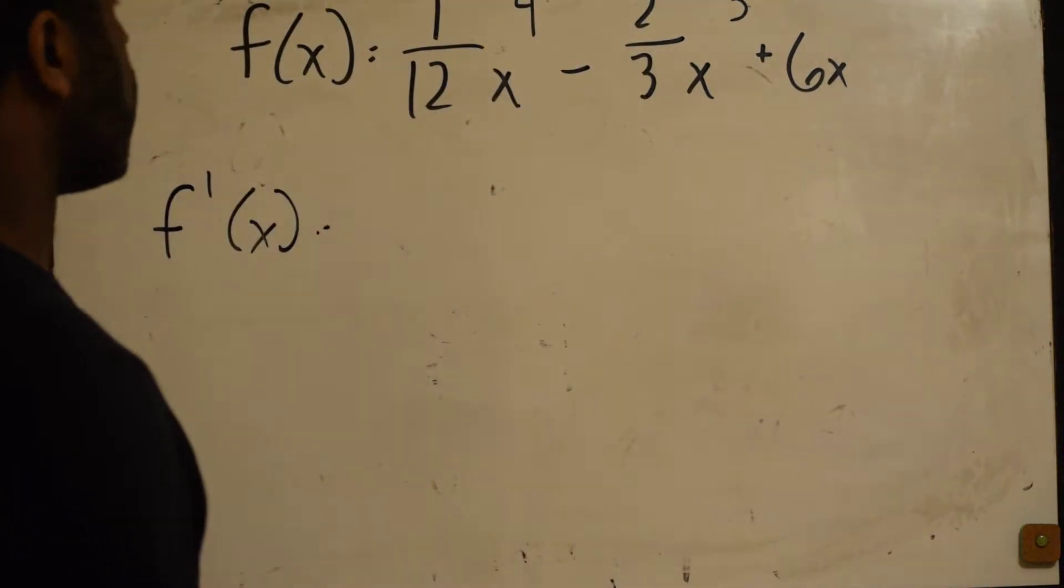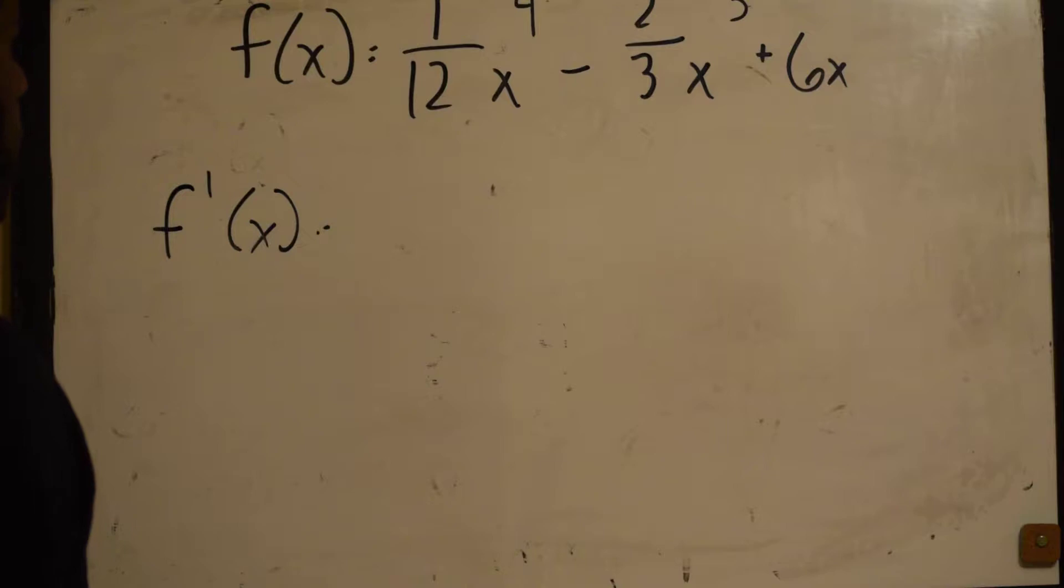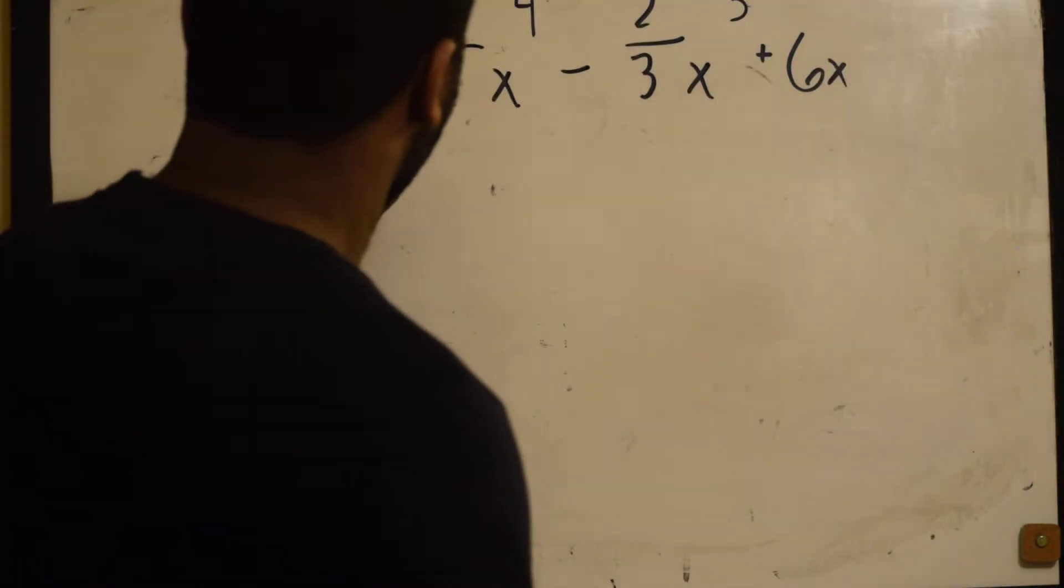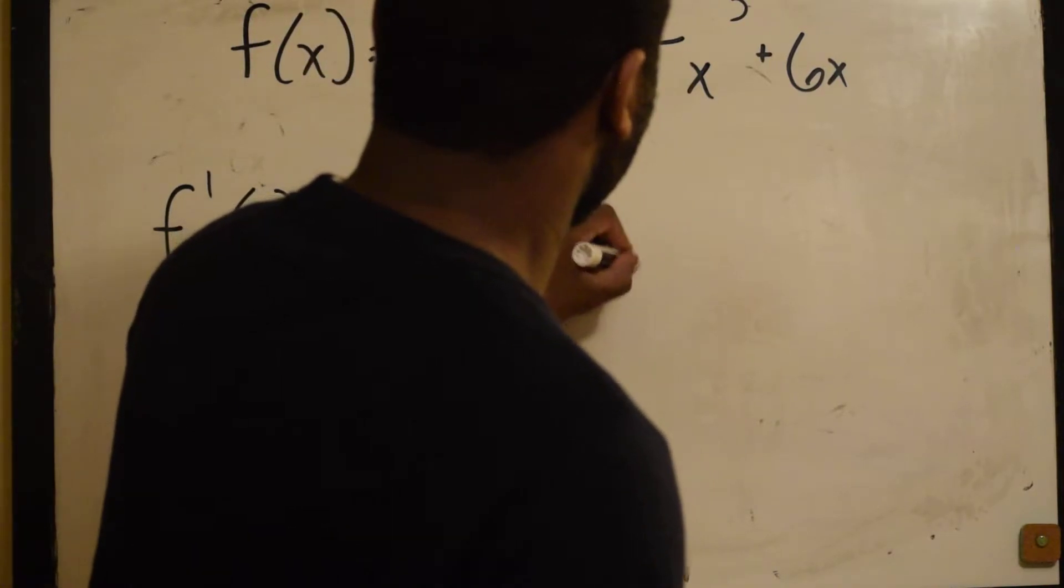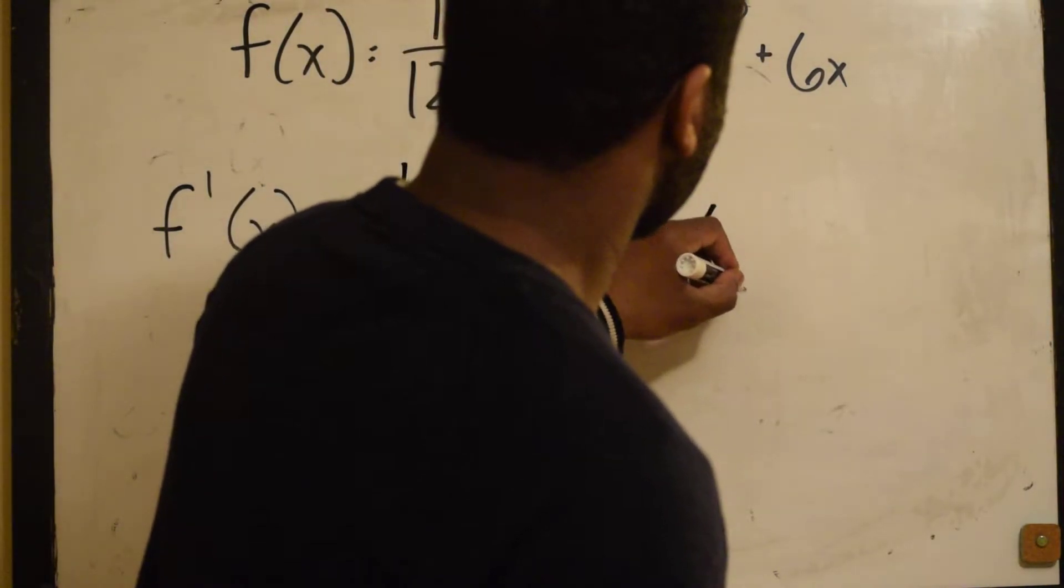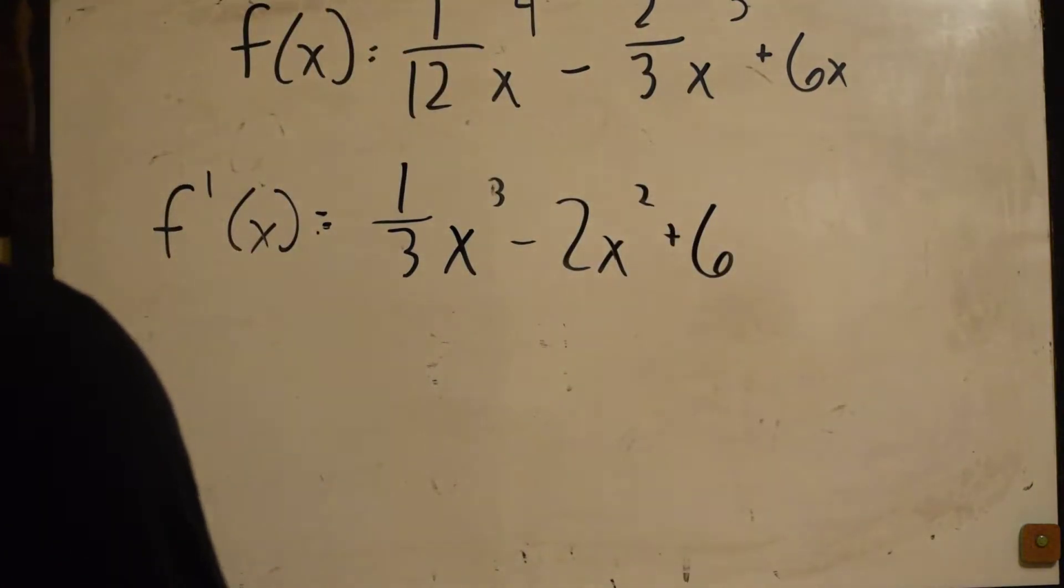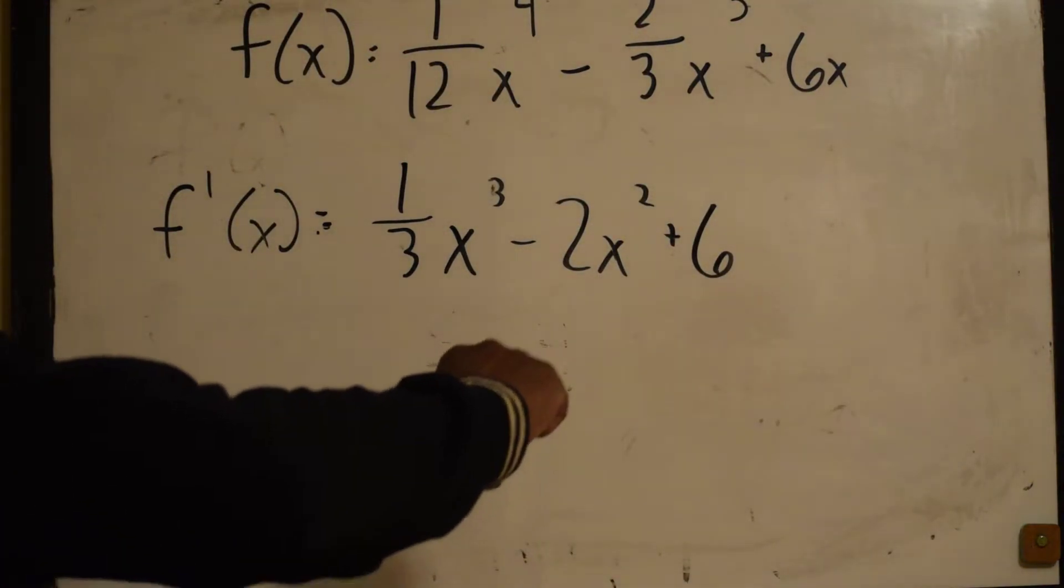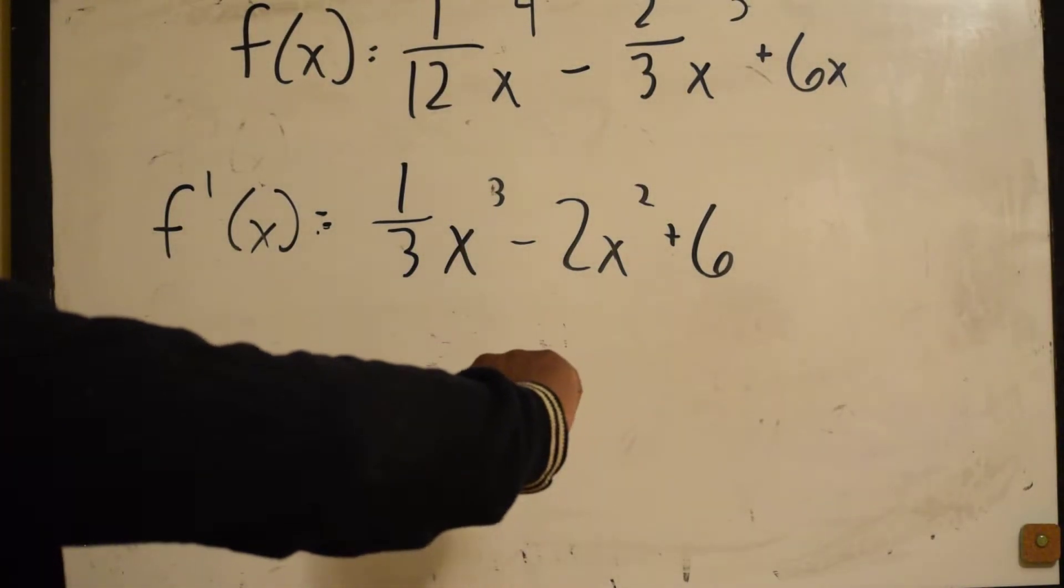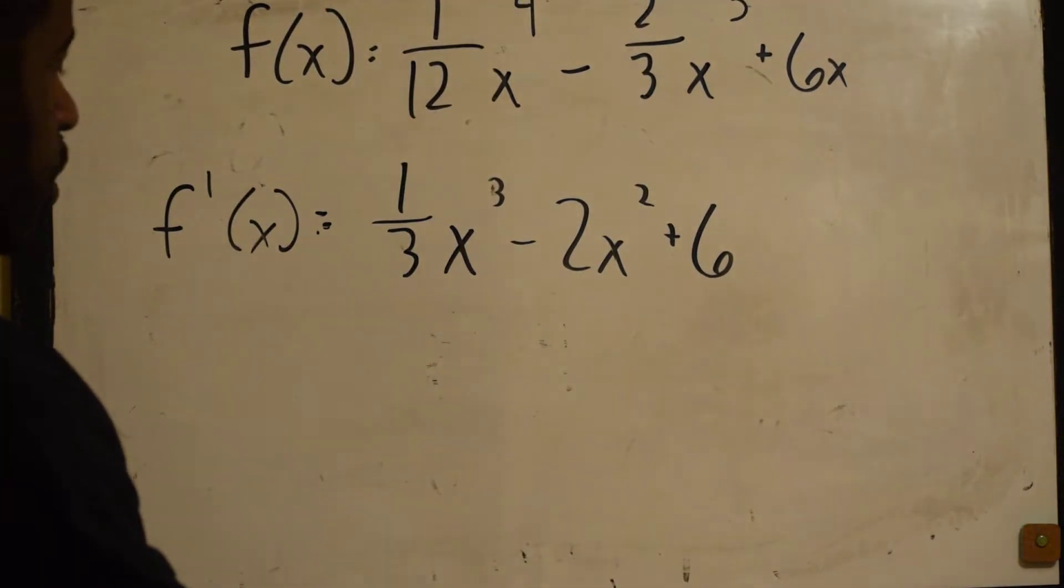4 times 1/12 is 4 over 12, which reduces to 1/3 x cubed minus 2x squared plus 6. Alright, normally we would go through and find our critical points by setting that equal to 0, but we're not looking for that.